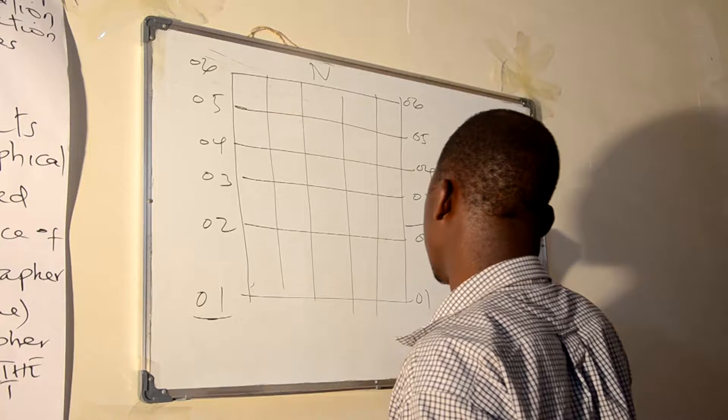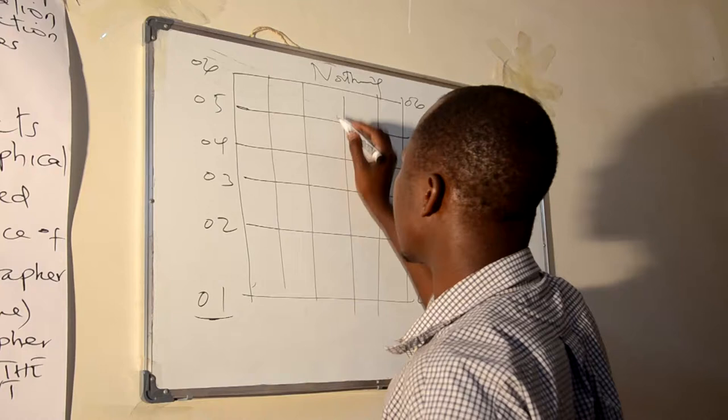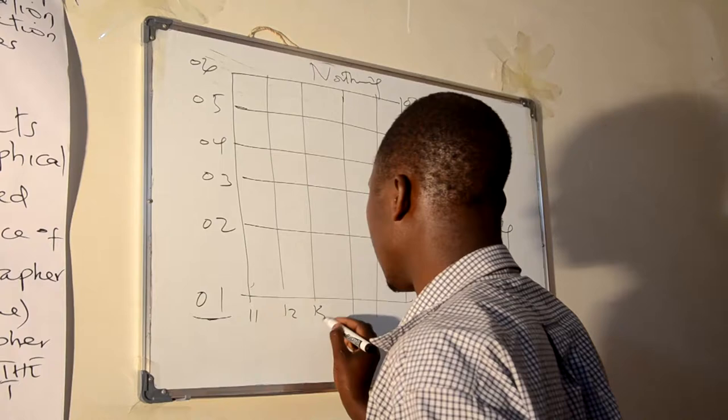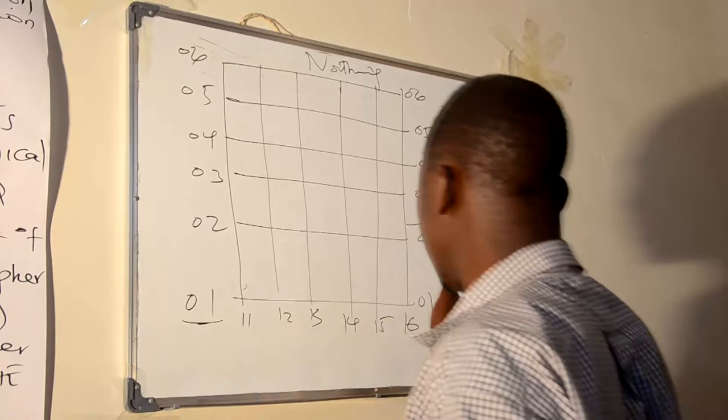Eastern parts — it can be 11, 12, 13, 14, 15, 16. It is called Eastern because it is increasing from the lowest to the highest, from western to eastern. That is why it is called Eastern, and the other is called Northern because it is increasing to the northern parts.